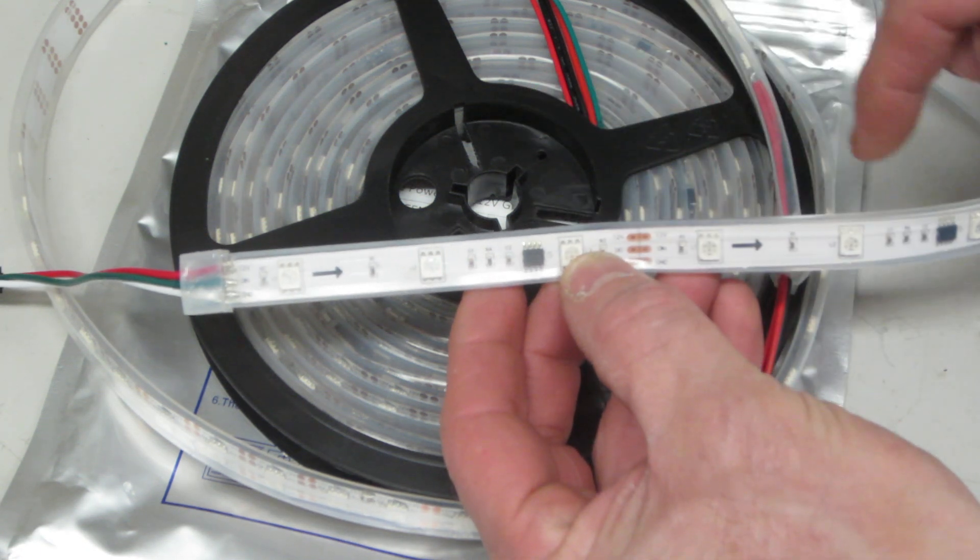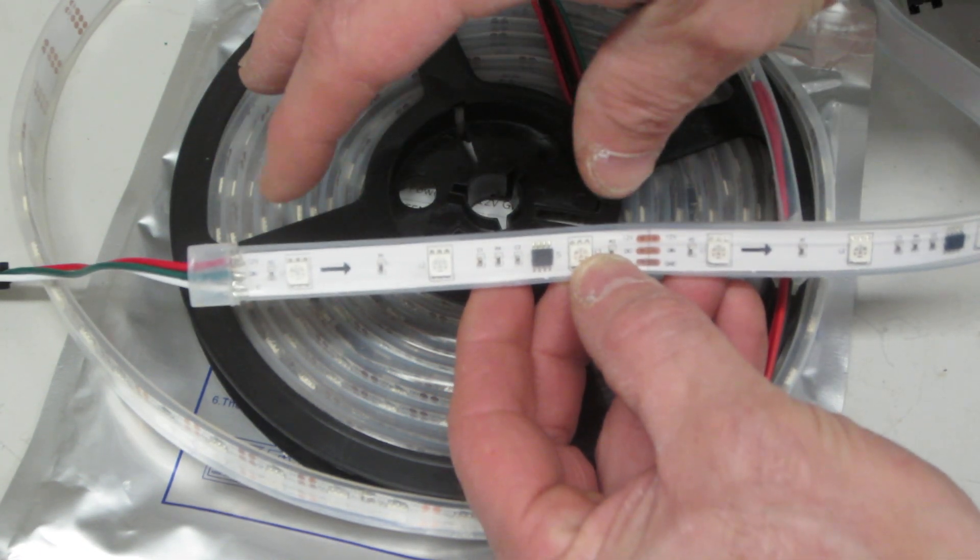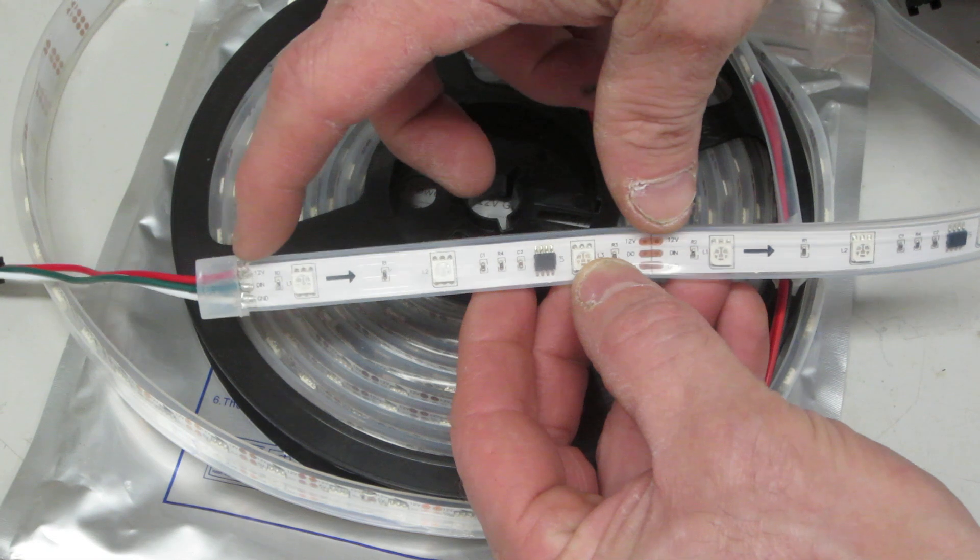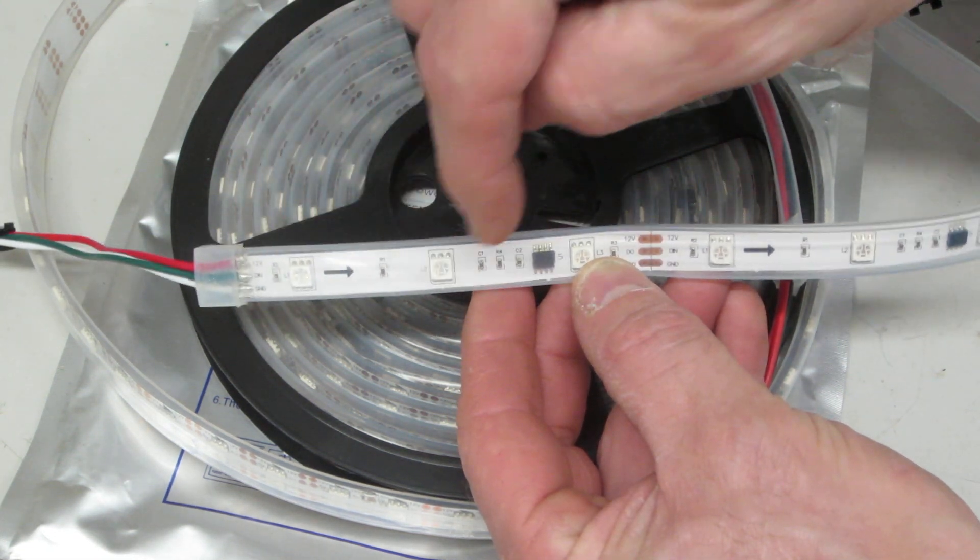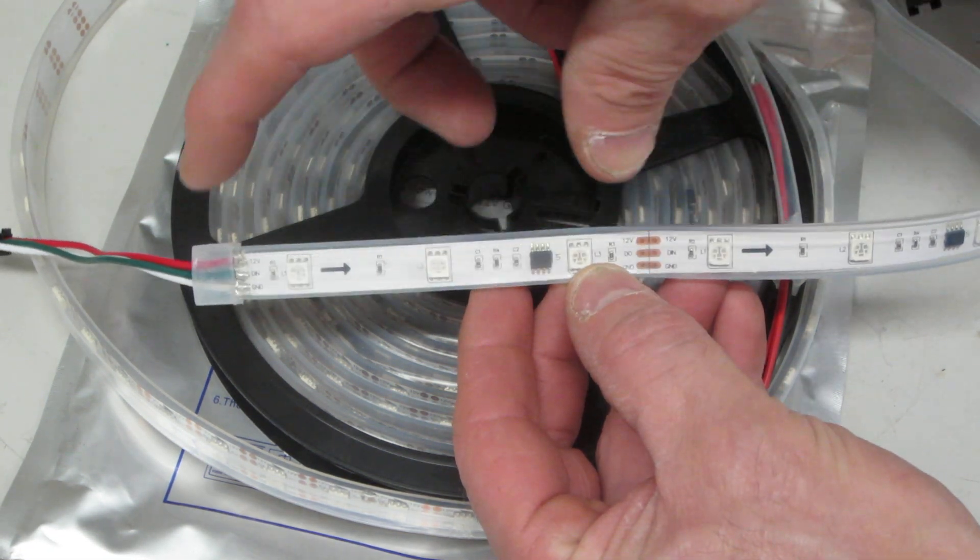In this particular case, this is 30-10, so we have 10 ICs per meter. What this means is that this section, which has one, two, three LEDs, is one pixel.